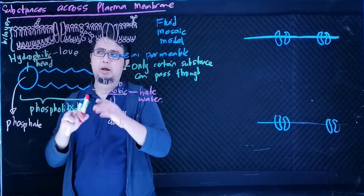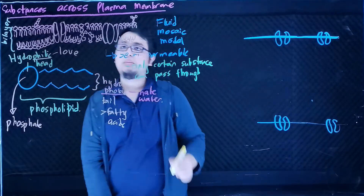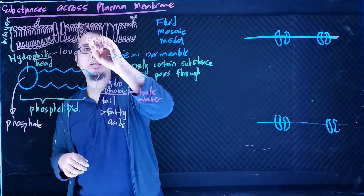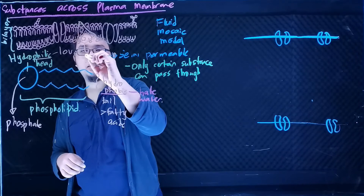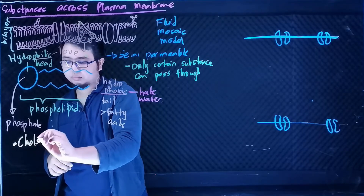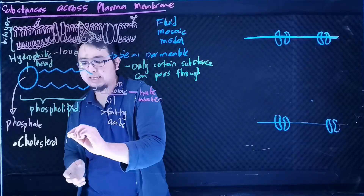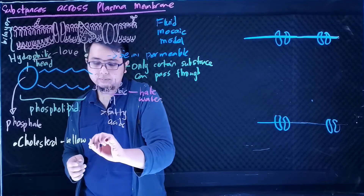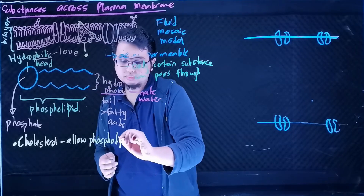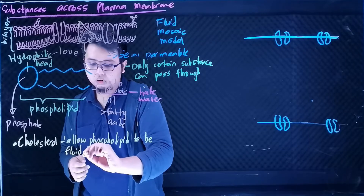Now we're going to talk about the other parts of our plasma membrane. The first structure here is cholesterol. Cholesterol actually allows the phospholipid to be either fluid or rigid.